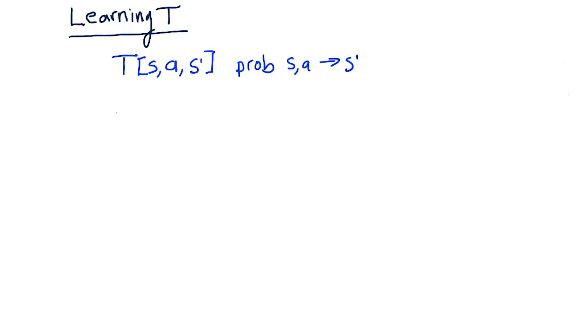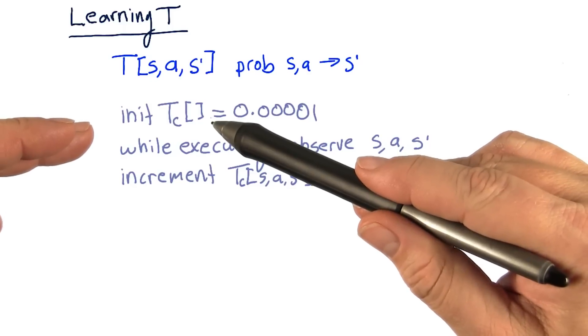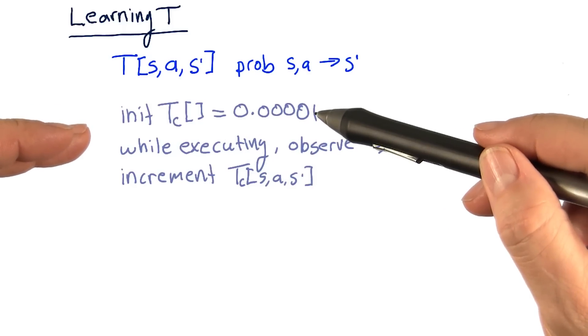I'm going to introduce a new table I call T count, or TC, and it goes like this. We initialize all of our T count values to be a very small number.